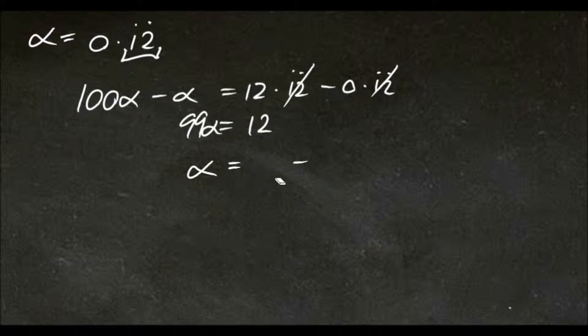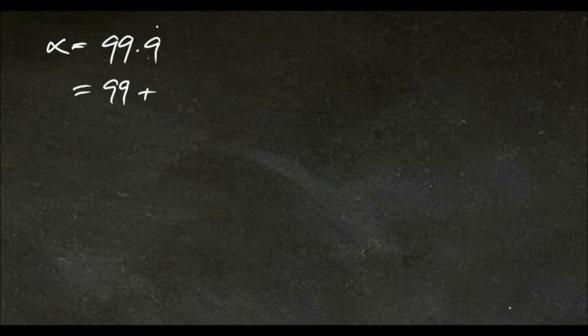We'll look at one more different example. We're given the number 99.9 repeater. So we'll set alpha equals this. Now the method for solving this is slightly different, because alpha could just be written as 99 plus our decimal value, 0.9 repeater.